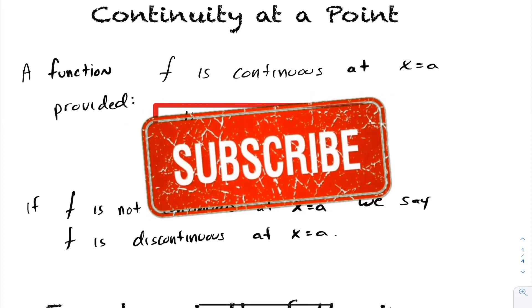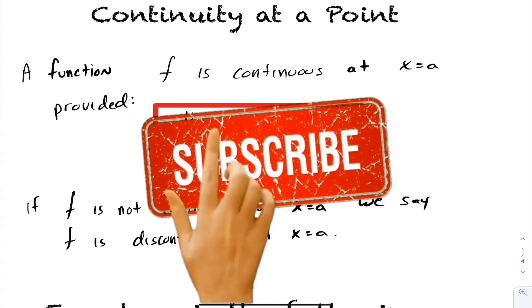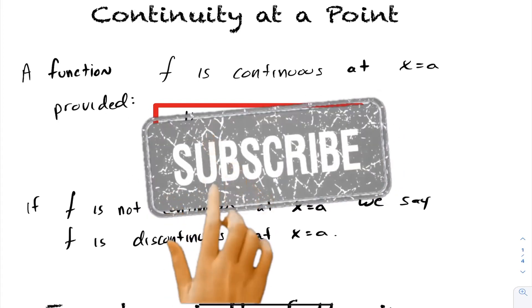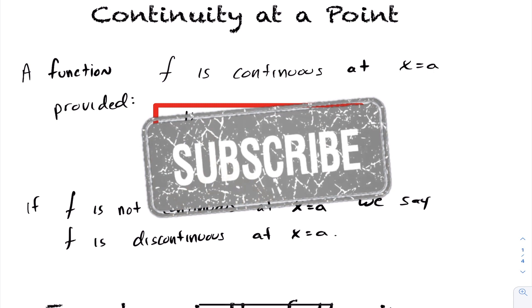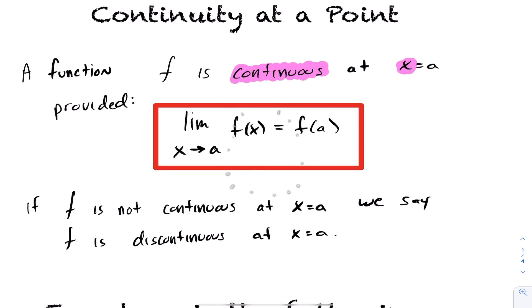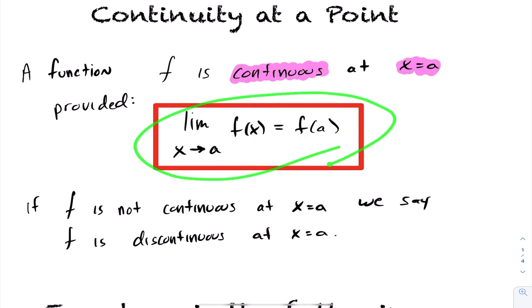In today's lesson, we're going to be looking at continuity at a point. A function f is said to be continuous at a point, let's say x equals a, provided the limit as x approaches a of f at x is equal to f at a.